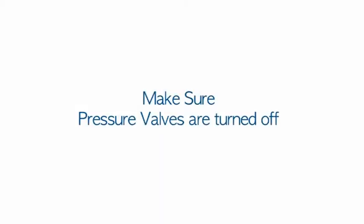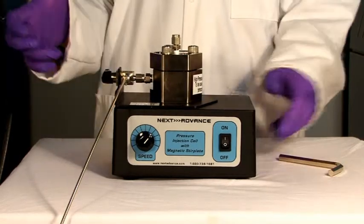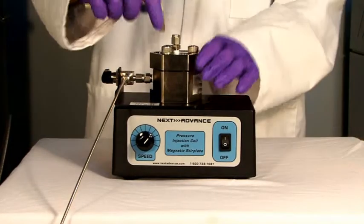Before opening the base of the pressure injection cell, first make sure that the valves at the pressure source are turned off. Next, open the three-way valve on the pressure injection cell to release any pressure from inside of the instrument.